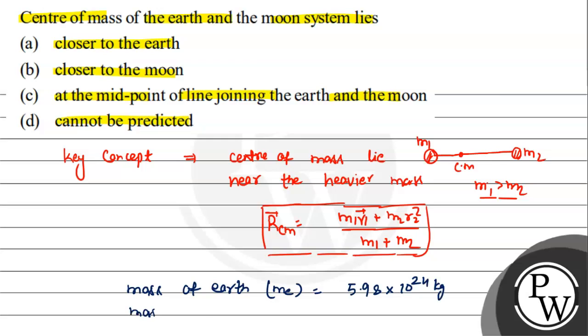Mass of moon is 7.4 into 10 to the power 22 kg. So mass of Earth is greater than mass of moon, that's why center of mass lies near the earth.